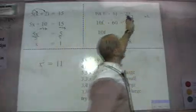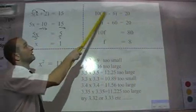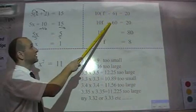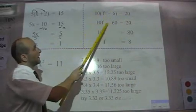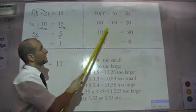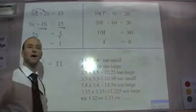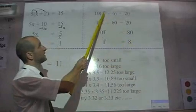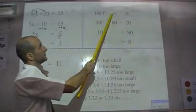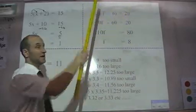Very similar to this one here. Multiply the bracket, 10 times F is 10F. 10 times minus 6 is minus 60. Then I add 60 to both sides to get rid of that. Then I divide both sides by 10 to get F equals 8. I can check I'm correct by substituting 8 back into here. 8 minus 6 is 2. 2 multiplied by 10 is 20. Yay!